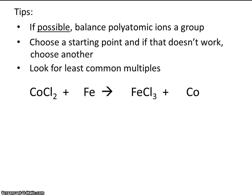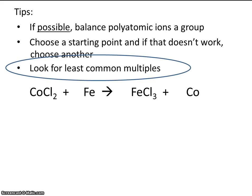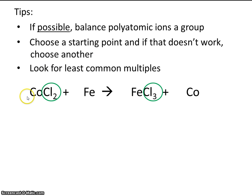Let's try one more example. This time, we're going to look for least common multiples. Let's look at the element chlorine. We have two chlorines on the left and three chlorines on the right. What's the least common multiple of two and three? It's six. So how can we make six chlorines on the left and six chlorines on the right? What coefficients do we need? Let's put a three here and a two there. So now we have six chlorines on the left and six chlorines on the right.